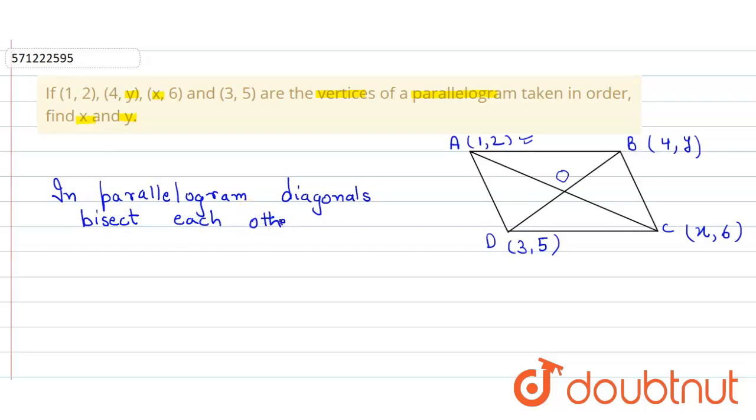So the point O will be the midpoint of both the diagonals. Point O will be the midpoint of diagonal AC and BD.